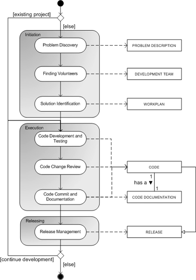Additional bug trackers include Request Tracker, written in Perl and given as a default to CPAN modules. SourceForge and its forks provide a bug tracker as part of its services, so many projects hosted at SourceForge.net default to using it. Jira is Atlassian's project management and issue tracking tool.